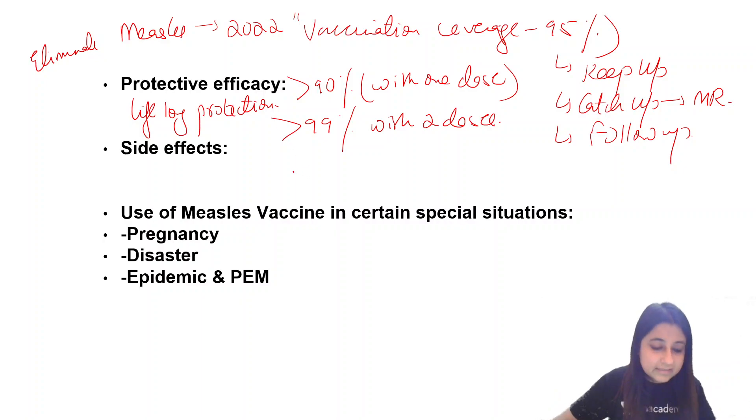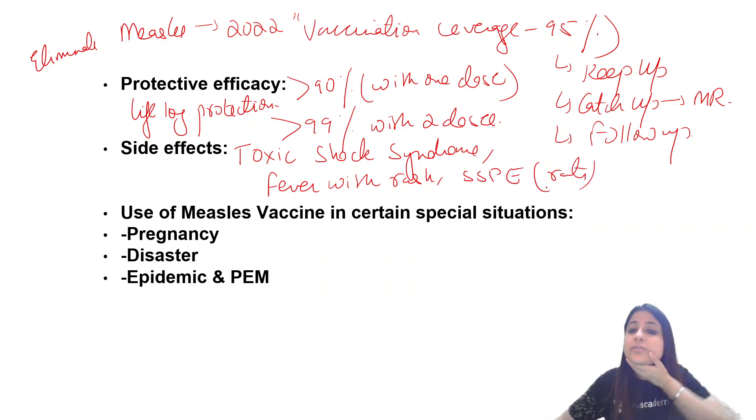What are the side effects? Very important - this has come as an MCQ. It can lead to toxic shock syndrome, fever with rash, and also SSPE, but that's very rare. It's a long-standing complication of measles, so it can happen with the vaccine also.